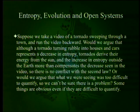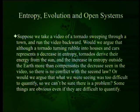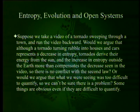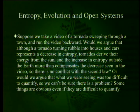Suppose we take a video of a tornado sweeping through a town and run the video backward. Would we argue that although a tornado turning rubble into houses and cars represents a decrease in entropy, tornadoes derive their energy from the sun, and the increase in entropy outside the earth more than compensates the decrease seen in the video, so there's no conflict with the second law? Or would we argue that what we were seeing was too difficult to quantify, so we can't be sure there is a problem? Some things are obvious even if they are difficult to quantify.